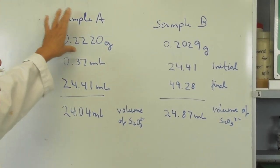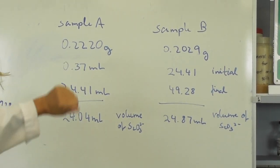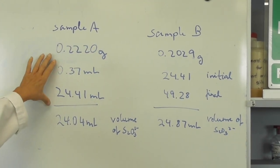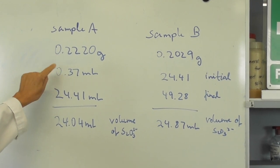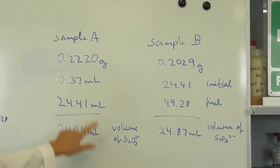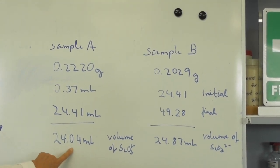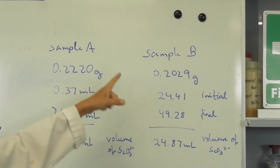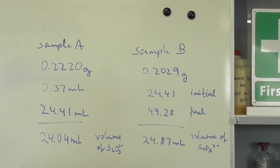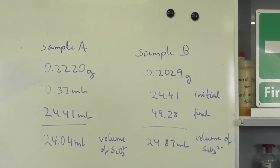For the calculations I've written down the volumes of the titration together with the weights of the samples. For sample A, my starting volume was 0.37 ml, my endpoint was 24.41 ml, so I added 24.04 ml of thiosulfate. And these are the values for sample B where I added 24.87 ml of thiosulfate.